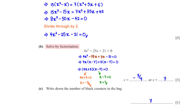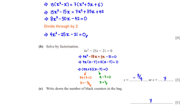Solving 4x² minus 25x minus 21 = 0 by factoring: rewrite minus 25x as minus 28x + 3x. Factoring gives (4x + 3)(x minus 7) = 0. So x = negative 3/4 or x = 7. Since x represents the number of black counters and cannot be negative, x = 7.